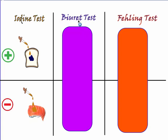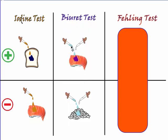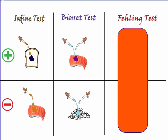The next test is the biuret test, which searches for protein. In this test we use two reagents: copper sulfate, which is a blue solution, and sodium hydroxide, which is colorless. So the original color of the biuret test is blue. A positive result — indicating protein is present — means the blue color changes to violet. If the color stays blue or changes to any other color, the result is negative, meaning no protein.